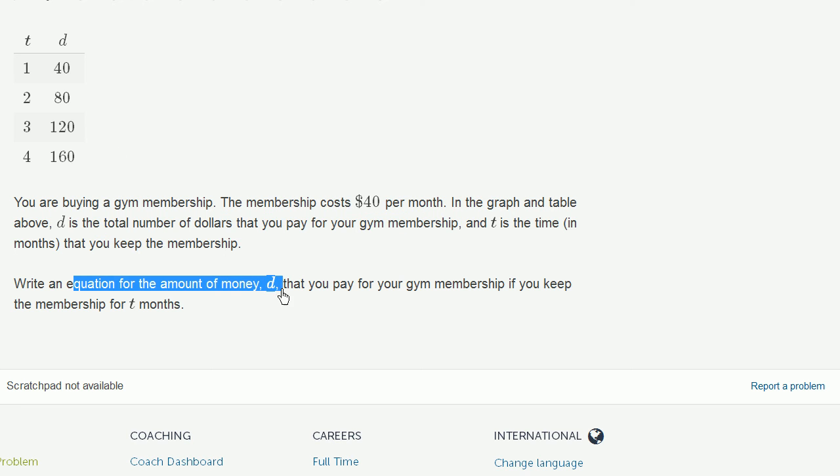Write an equation for the amount of money d that you pay for your gym membership if you keep the membership for t months. If you're one month, you pay $40. Two months, you pay another $40, you pay $80.